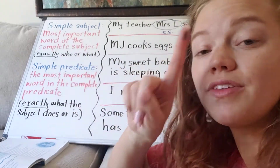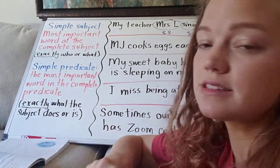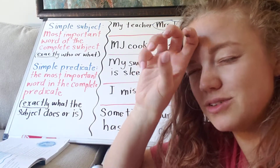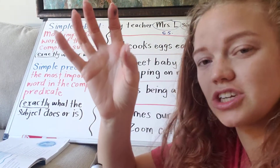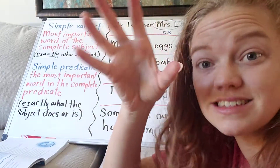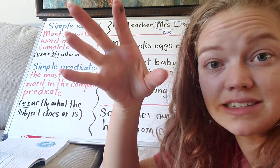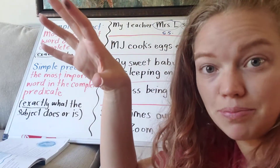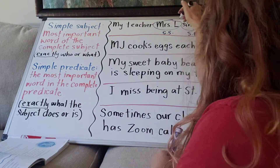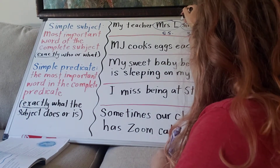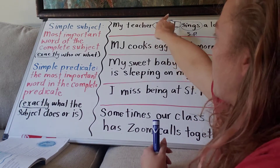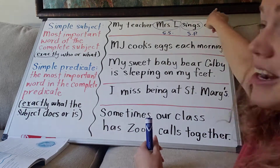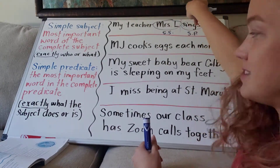One thing that sometimes helps is to make a dividing line so you can see each section clearly. Your simple subject has to be part of the complete subject and your simple predicate has to be part of the complete predicate. So if I drew my dividing line here, I'd know the simple subject needs to come from this side and the simple predicate needs to come from this side.